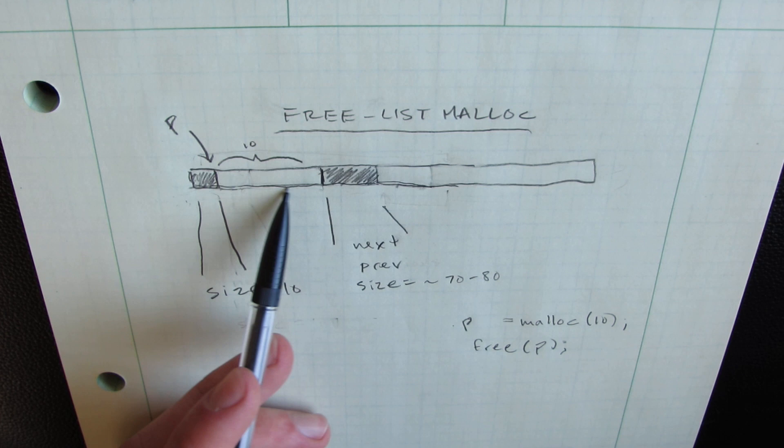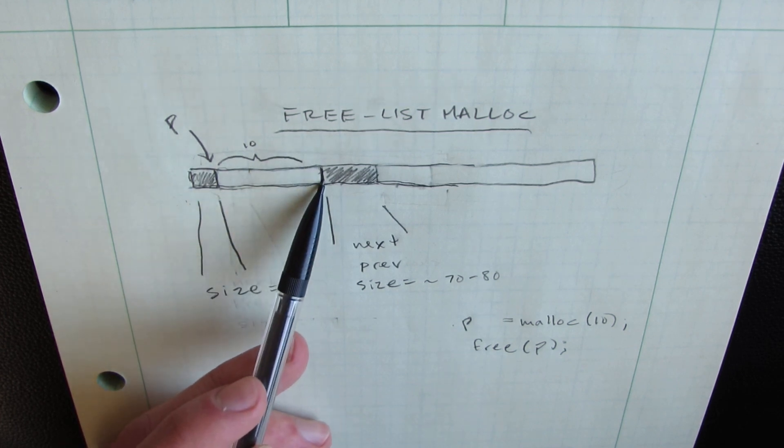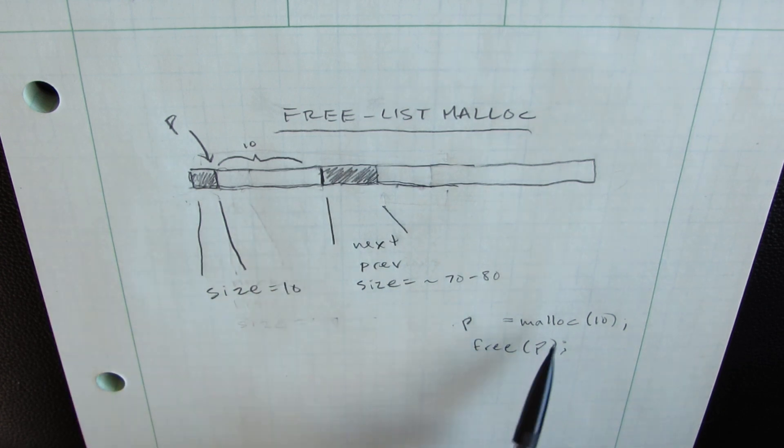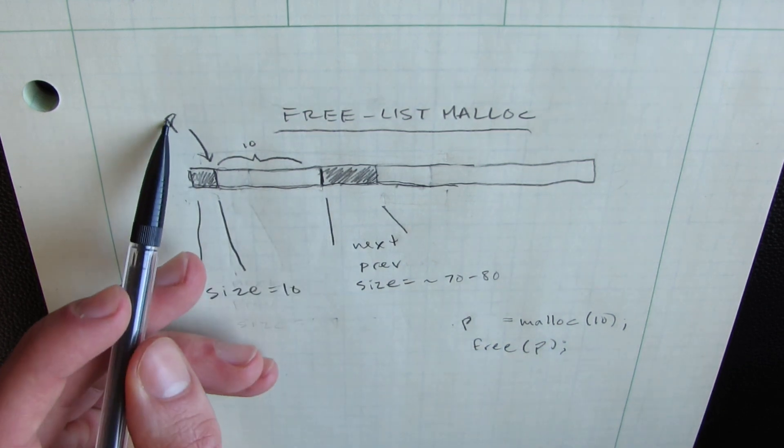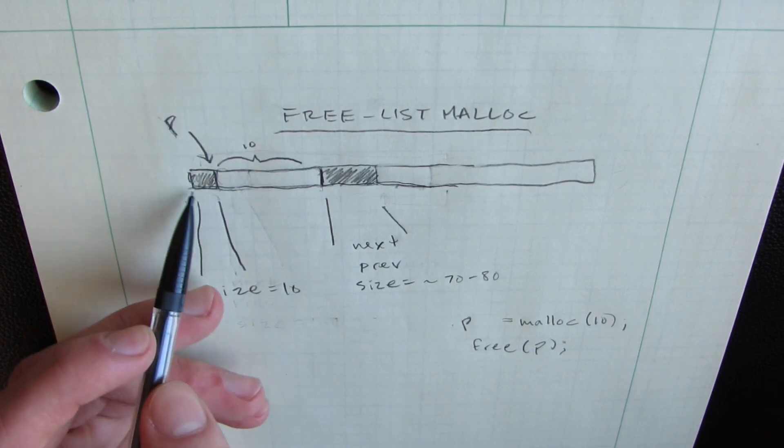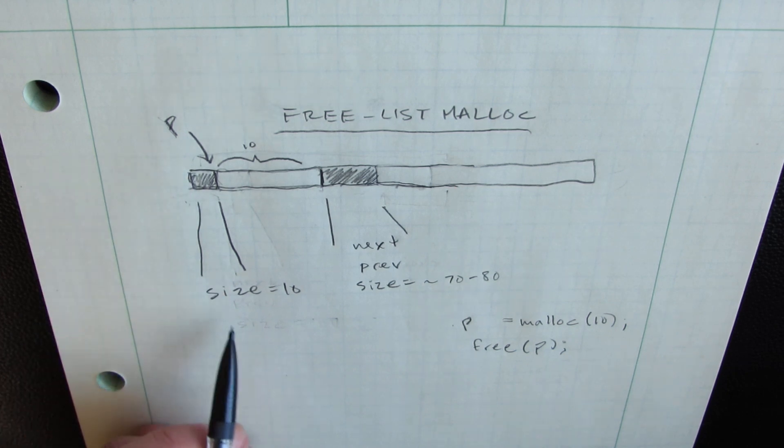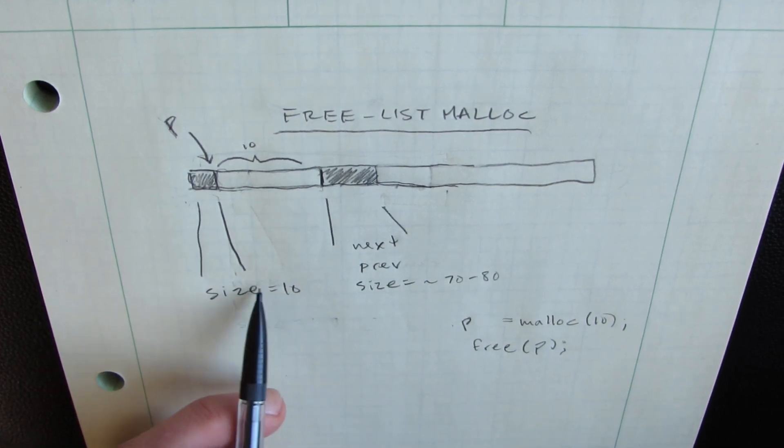Well, we have 10 bytes here, and this 10 bytes is used to actually store that payload. And so the p pointer is going to point to this spot right here. For an allocated block, we also have a small header. And for now, let's just say it stores the size of the block.